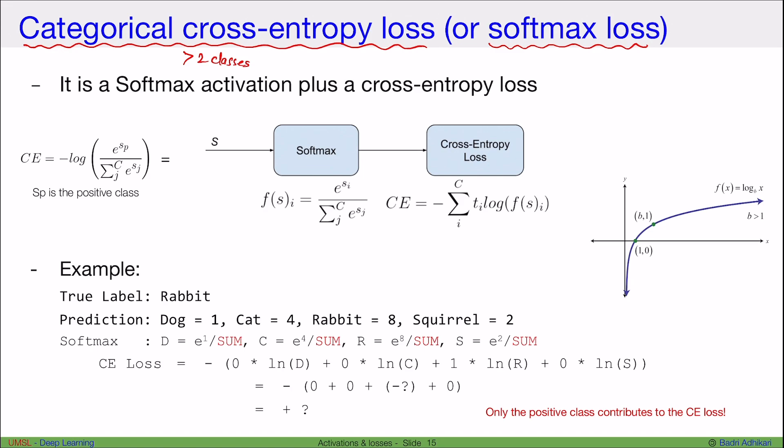So basically, the categorical cross-entropy loss is a softmax activation plus a cross-entropy loss. Now, let's see how this is calculated. Cross-entropy loss is simply negative log of the softmax output.